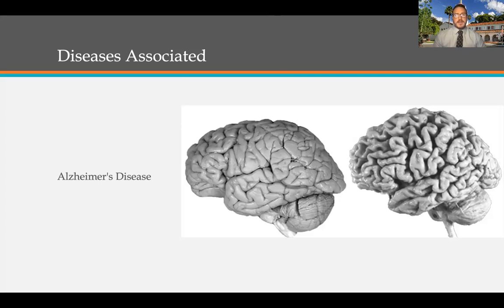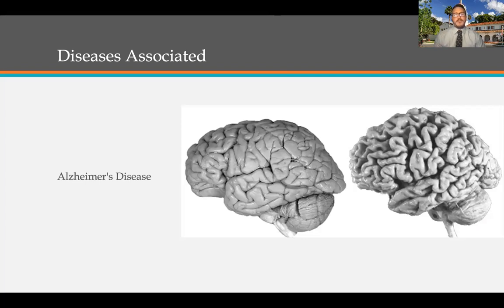What causes amyloid beta plaques is still being researched worldwide, but it is associated with obesity and diabetes. We know there is an alteration in glutamatergic and cholinergic neuron transmission, and changes in the hippocampus region where learning and memory take place. There is a reduction in synaptic proteins at the synaptic terminals, but no treatment currently exists for this disease. There are drugs that can help with symptoms, but no treatment once those amyloid beta plaques begin to form.